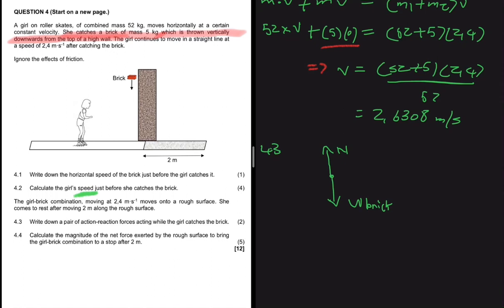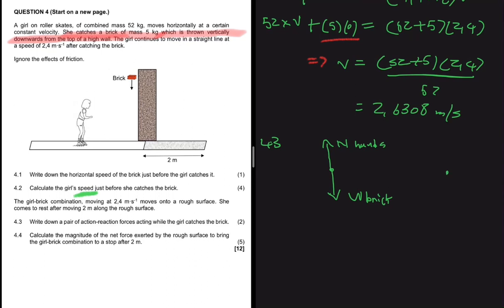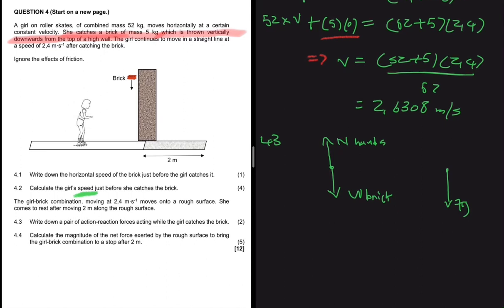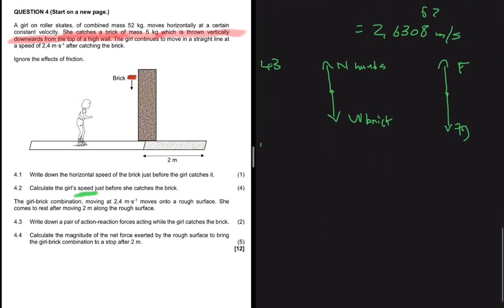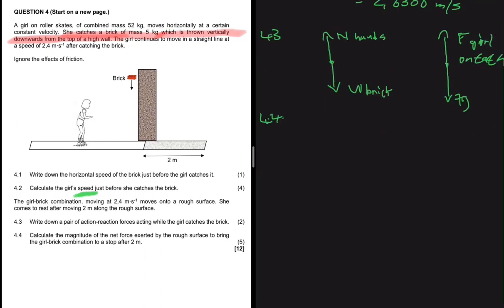Another action-reaction pair: the force of gravity — the Earth pulling the girl downward — and by Newton's third law, the girl pulling the Earth upward with an equal and opposite force. Those are our action-reaction pairs for 4.3. Now moving to 4.4: calculate the magnitude of the net force exerted by the rough surface to bring the girl-brick combination to a stop after two meters.